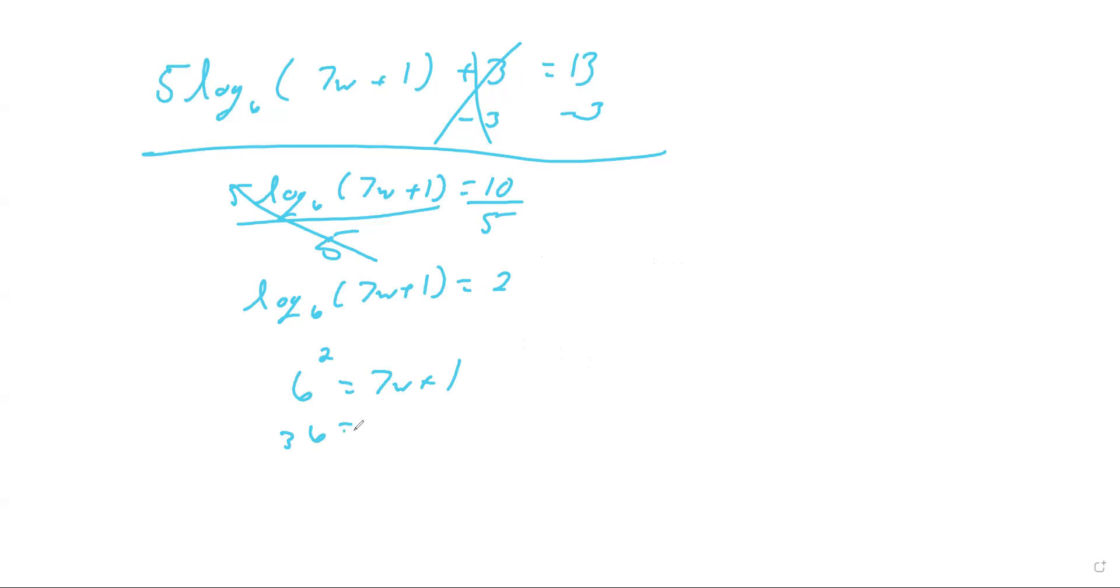Now I have a regular linear equation that I can solve. So 6 squared is 36. I'd want to subtract 1 first, so it gives me 35 equals 7w. And then I'll divide by 7, so then I get 5 equals w. You still got to check whatever answer you get. Plug it back in to make sure it is greater than 0 inside the logarithm. And we see that 7 times 5 is 35 plus 1 is 36, definitely greater than 0. So w equals 5 would be the answer.